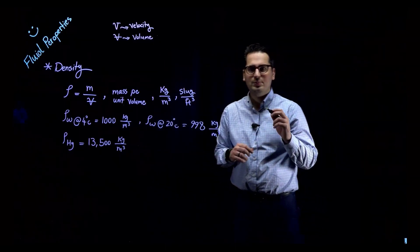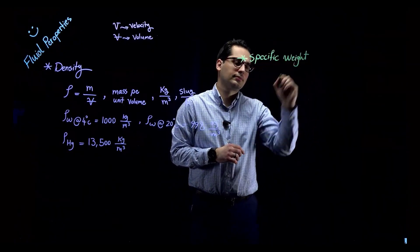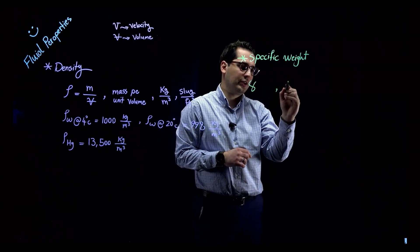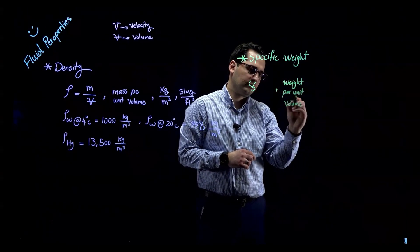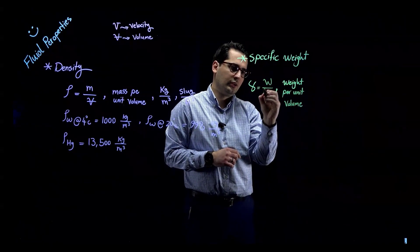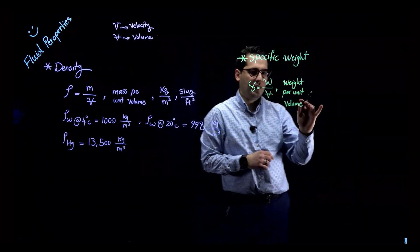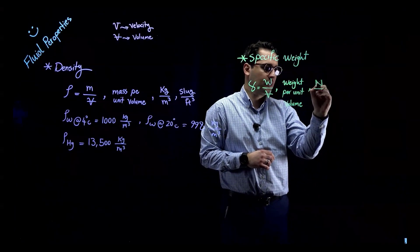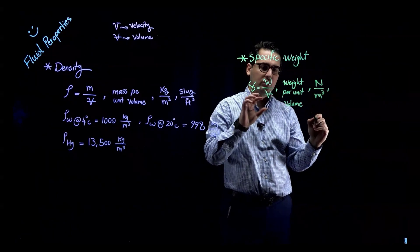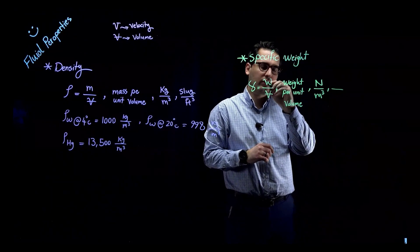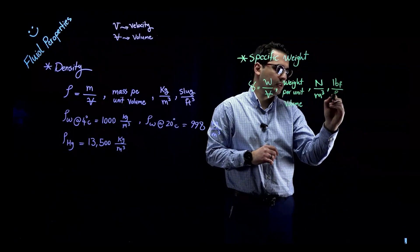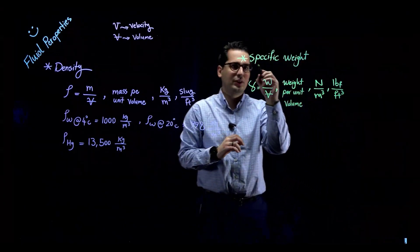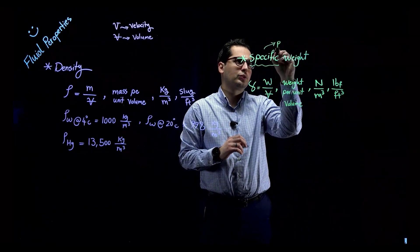Another fluid property is specific weight, shown by the symbol gamma. Specific weight is defined as weight per unit volume. The mathematical equation is gamma = W divided by volume. In SI, the units are Newtons per cubic meter. In the US customary system, the units are pound-force per cubic feet. In fluid mechanics, whenever you see the word 'specific,' it means 'per unit.'